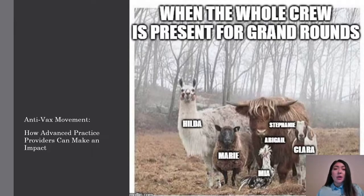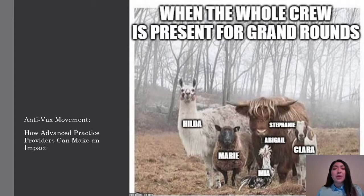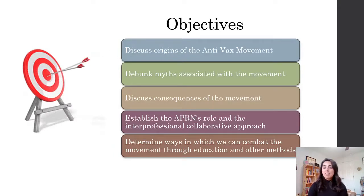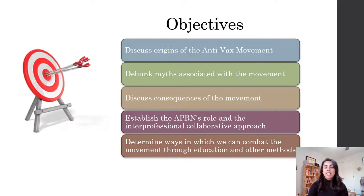We are going to be addressing the nurses' role in immunization, how we can provide our patients with the right type of education, and how we can combat this movement and prevent any re-emerging disease. The objectives of this presentation are to discuss origins of the anti-vax movement, debunk myths associated with the movement, discuss consequences of the movement, establish the APRN's role and the interprofessional collaborative approach, and determine ways to combat the movement through education and other methods.